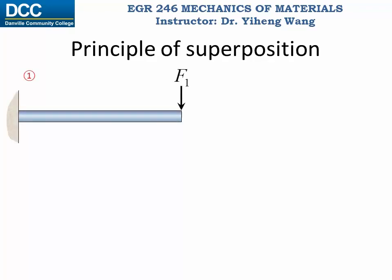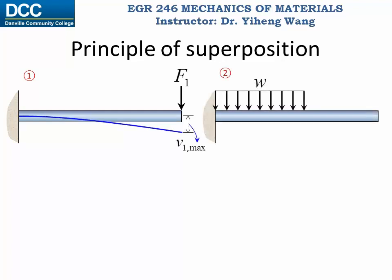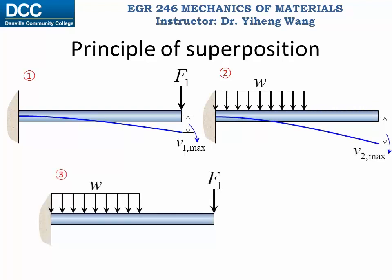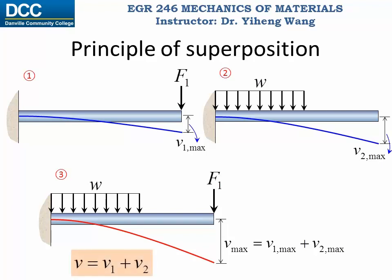For example, for this beam, if we know its elastic curve under loading situation one, as well as its elastic curve under loading situation two, then for loading situation three, which is the combination of the previous two loading situations, the elastic curve of this beam is simply the combination of the previous two elastic curves. Not only does the maximum deflection equal the addition of the previous two maximum deflections, but the deflection at any point also equals the addition of the deflection at the same point evaluated from the previous two situations.